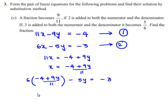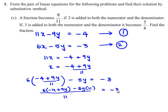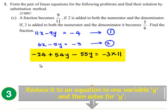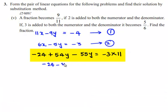The LCM is 11. So expanding: 6 times of minus 4 is minus 24, plus 6 times of 9y is 54y, minus 5y multiplied by 11 is 55y. This gives minus 24 plus 54y minus 55y is equal to minus 3 times 11, which is minus 33.